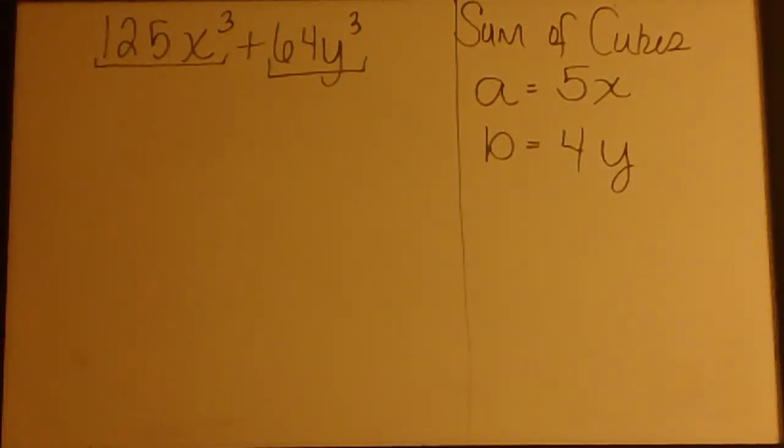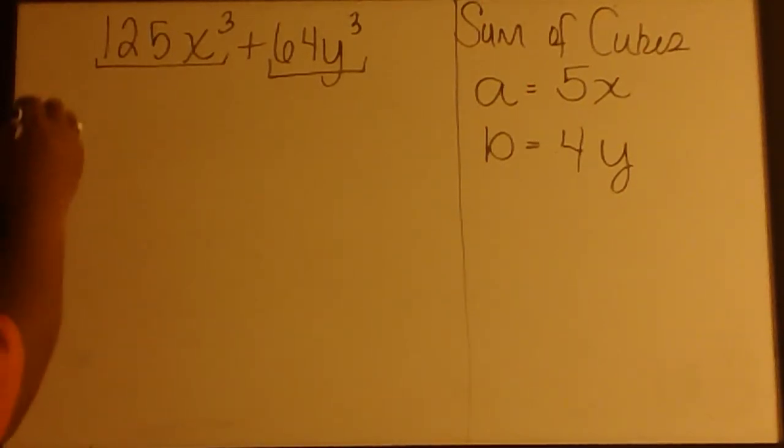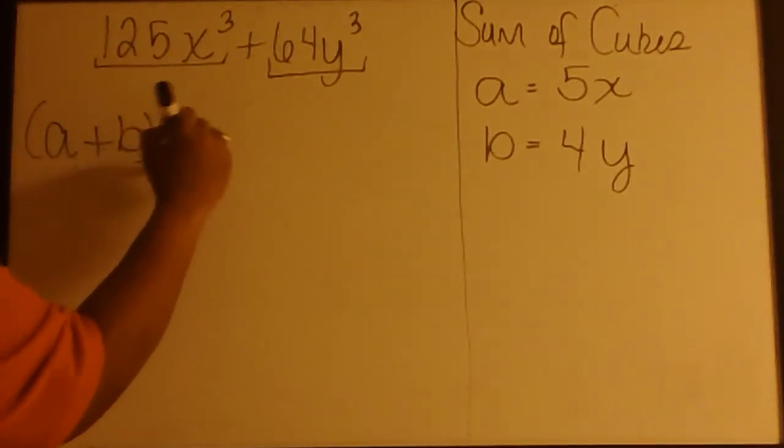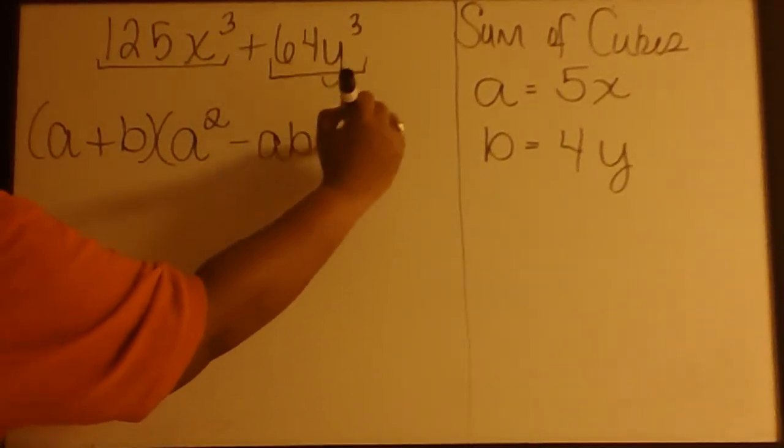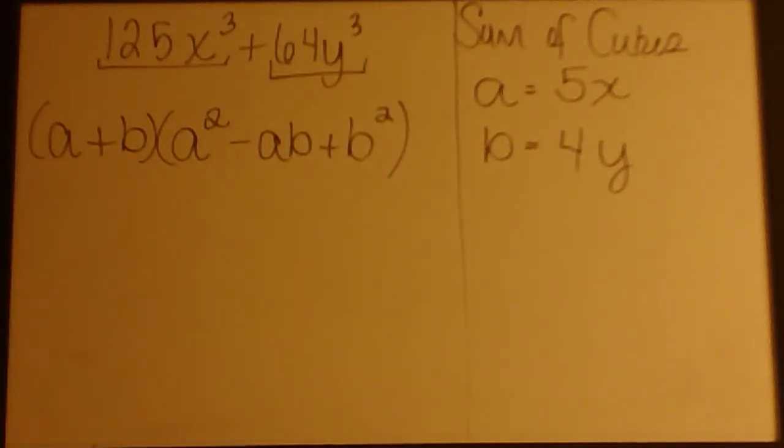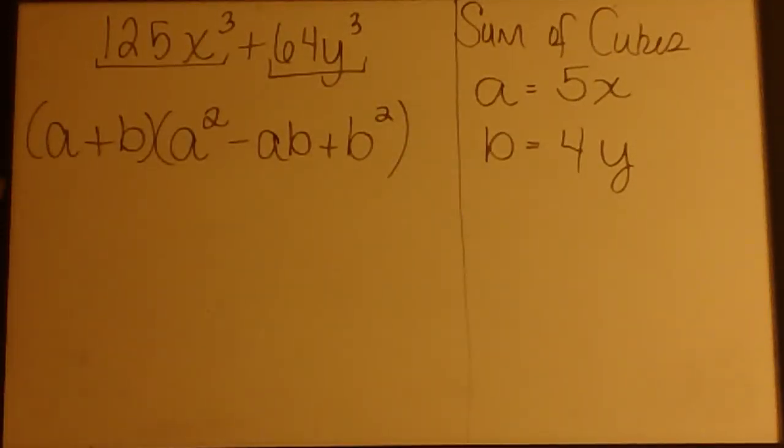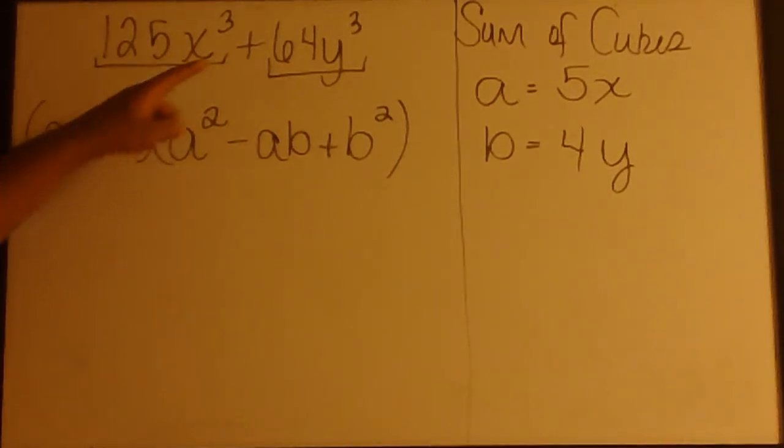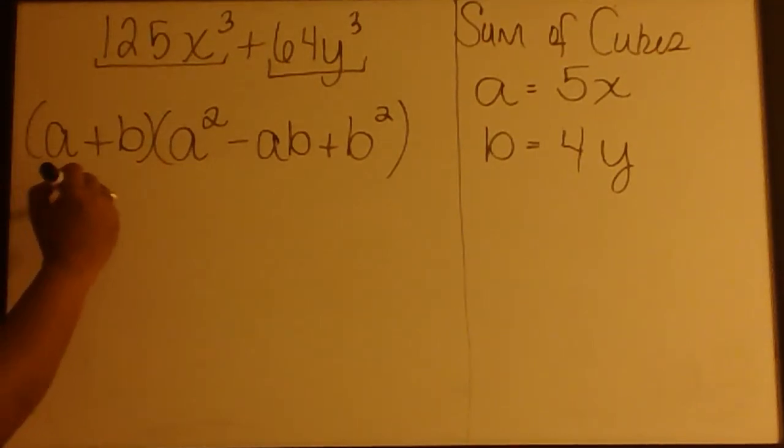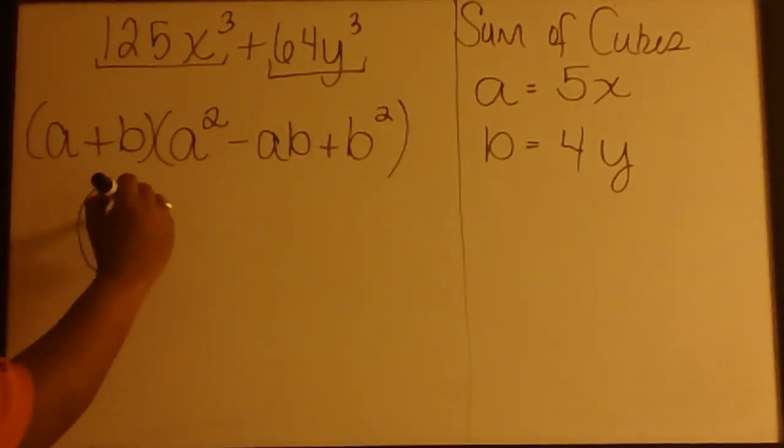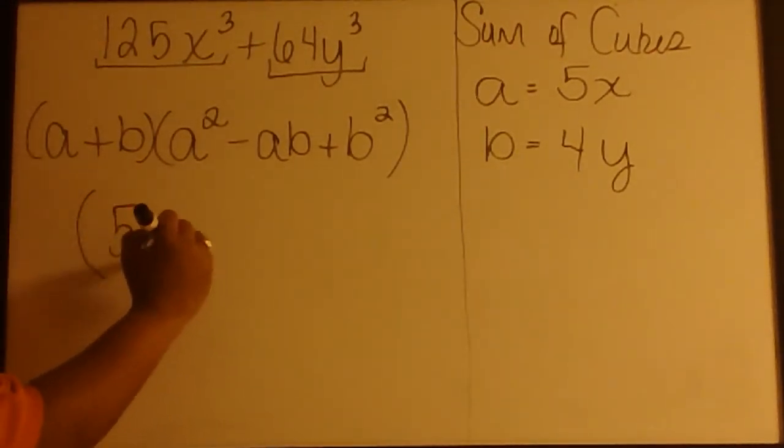So we'll be able to factor this as a sum of cubes, which means that the formula we need looks like this. Notice that we have a sum in the first parenthesis. So in the first parenthesis, we have A plus B, which is 5X plus 4Y.